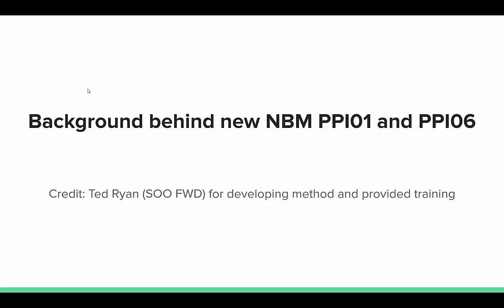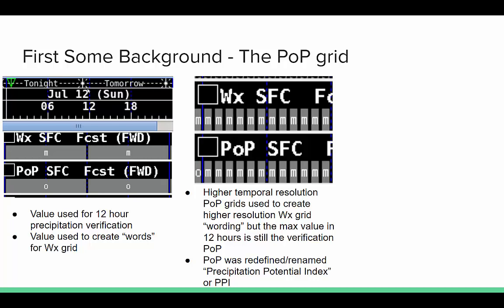Now let's talk about the MBM PPI01 and PPI06. Credit goes to Ted Ryan of the Sudan at Fort Worth for both developing this method and for the training provided here. Before we dig in, we need to discuss some background on the POP grid. The POP, as you know from point-and-click or NDFD, is always referred to as POP 12, and it's used for precipitation verification as well as when you issue words like 'chance of precipitation, blank percent.'